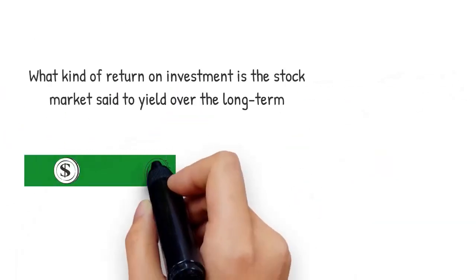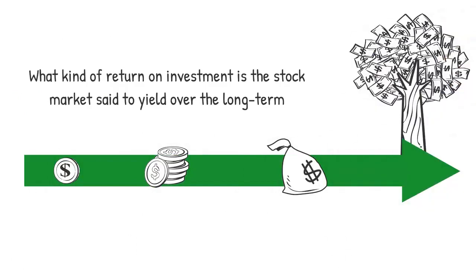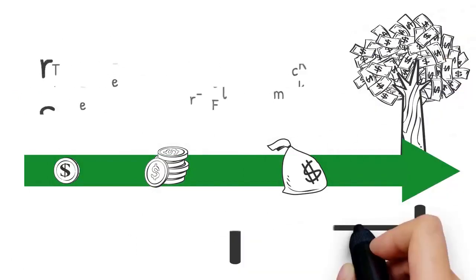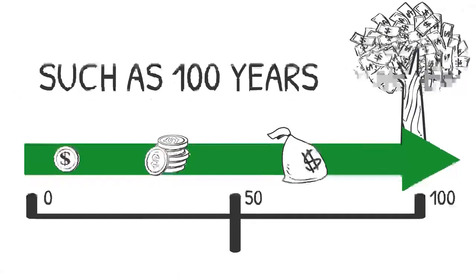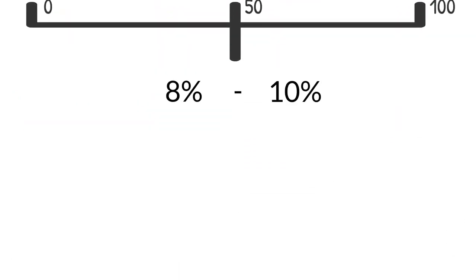Have you ever asked yourself what kind of return on investment the stock market is said to yield over the long term, such as 100 years? The answer is usually around 8 to 10 percent, so let's split the difference and say it's 9 percent.